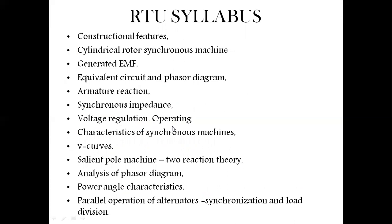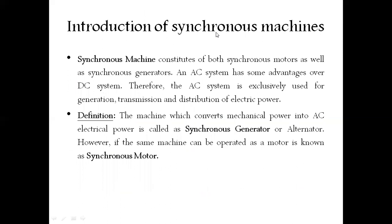As an introduction, synchronous machines constitute both synchronous motors as well as synchronous generators. The AC system has advantages over the DC system, so the AC system is exclusively used for generation, transmission, and distribution. In our conventional system we use alternators — synchronous generators — for power generation, because synchronous generators work at constant speed drives and generating AC supply is more beneficial than using asynchronous machines.